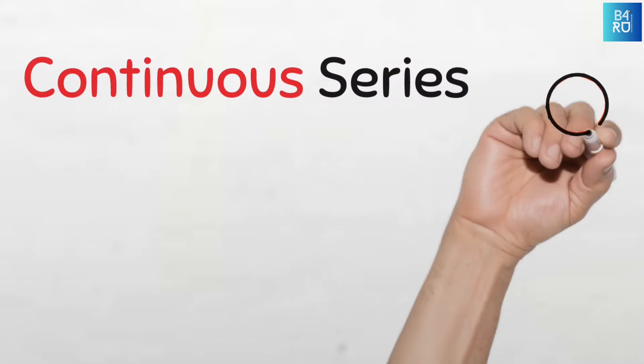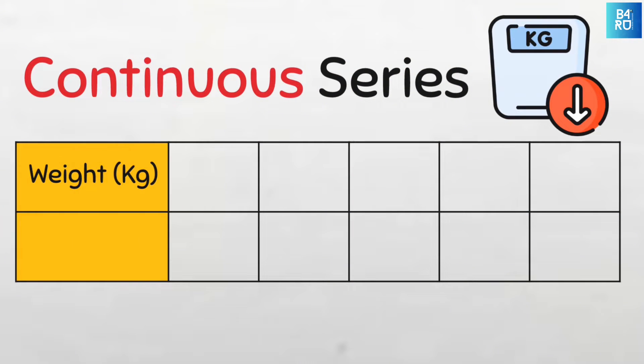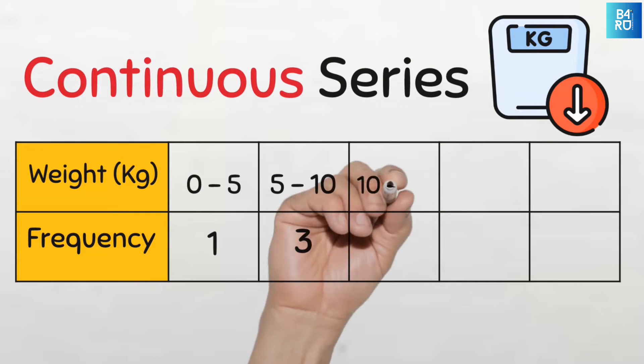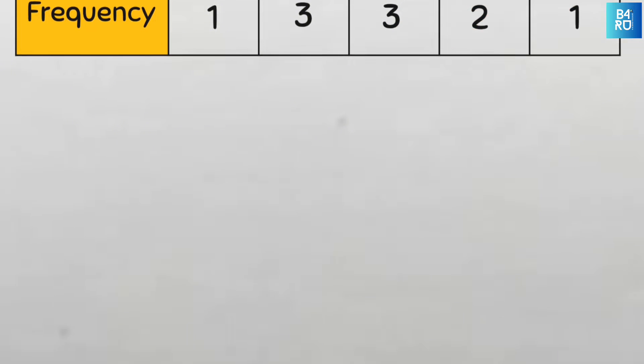Mean for Continuous Series Data. This is a continuous series data on the weight in kilograms of 10 children attending the nutritional clinic in Samaruzaria, Nigeria. We know this to be a continuous series because we can see that the data is grouped and the frequency for each class is provided.